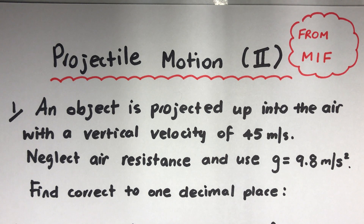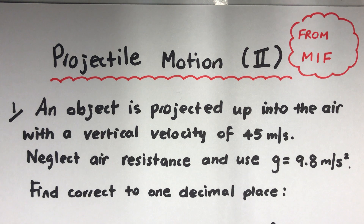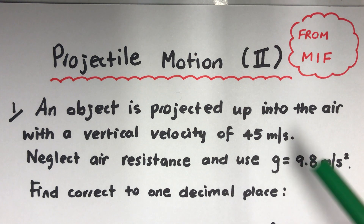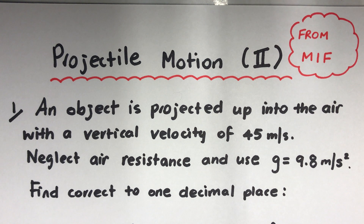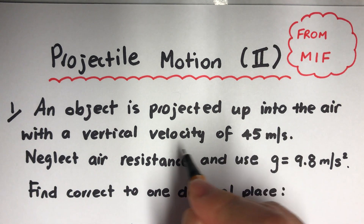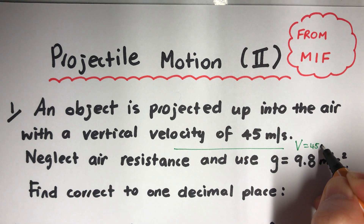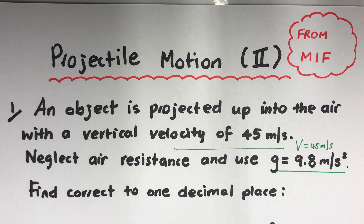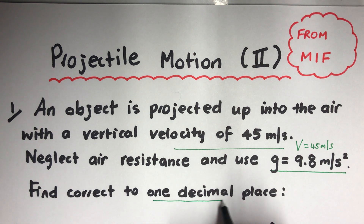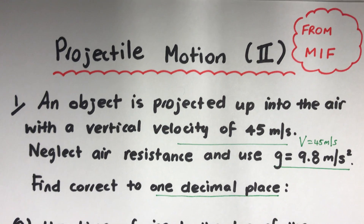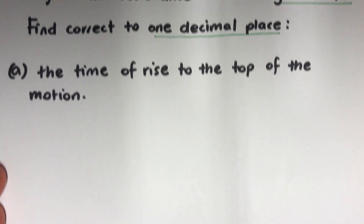This is the second lesson for projectile motion, covering questions from the Maths in Focus textbook. Question one: an object is projected up into the air with a vertical velocity of 45 metres per second. Neglect air resistance and use gravity G equals 9.8 metres per second squared. Find, correct to one decimal place, the answers to several parts. My initial velocity is 45 metres per second and gravity is 9.8.